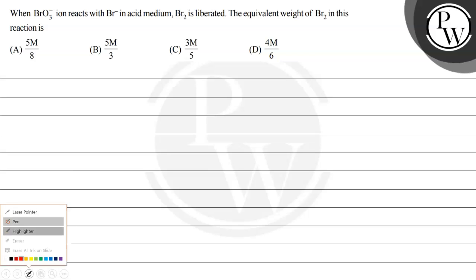Hello Bachcho, let's read this question. When BrO3- reacts with Br- in acid medium, Br2 is liberated. The equivalent weight of Br2 in this reaction is - and we have four options. Let us solve this question.